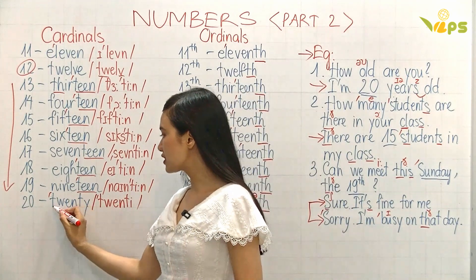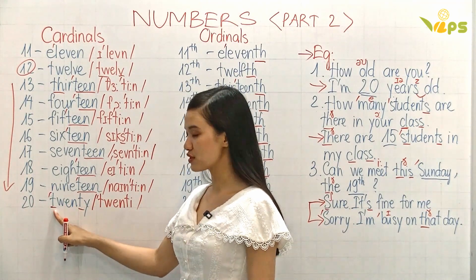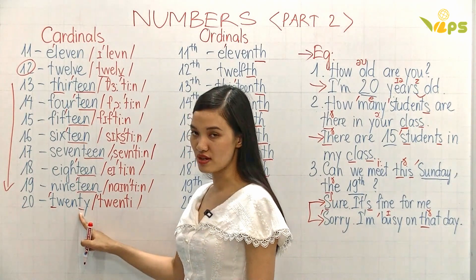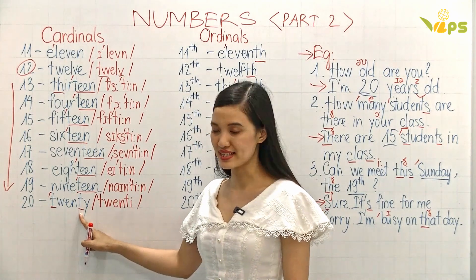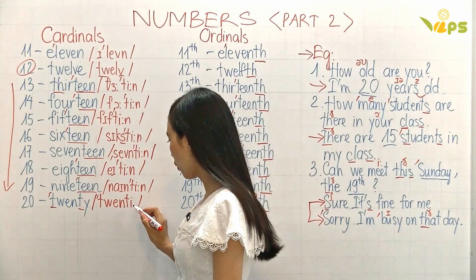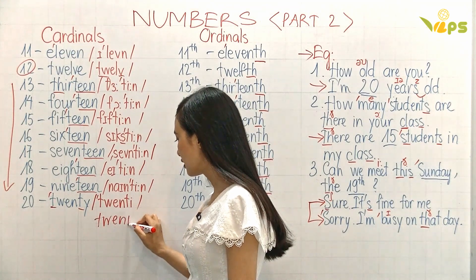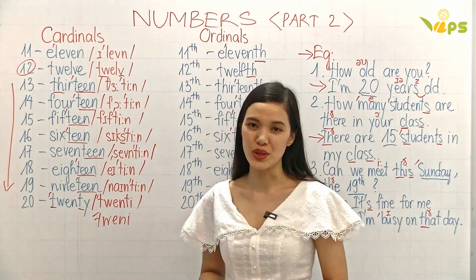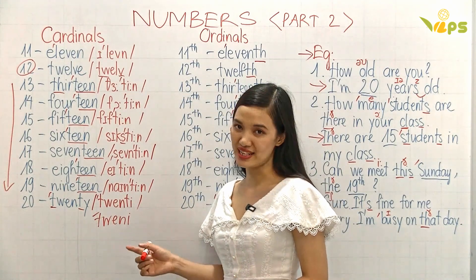For these two T's — this T is stressed, so we have to say 'teen.' And this T that is not stressed, you can say 'twenty' or 'twenty,' okay? And in American English, people prefer saying 'twenty.' You can say 'twenty' or 'twenty' — the same.